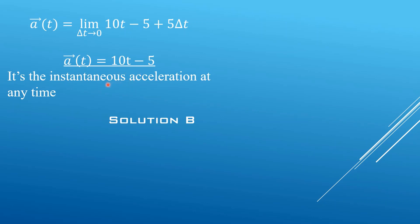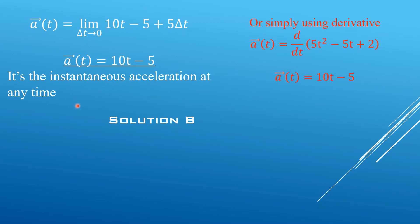The instantaneous acceleration at any time, or simply using the derivative, is a(t) = d/dt of (5t² - 5t + 2).